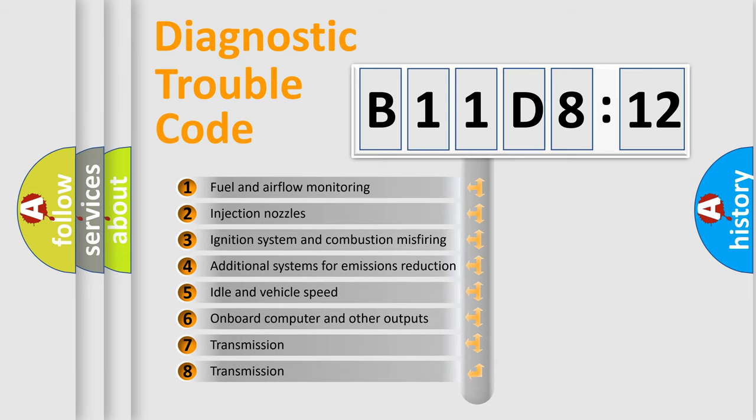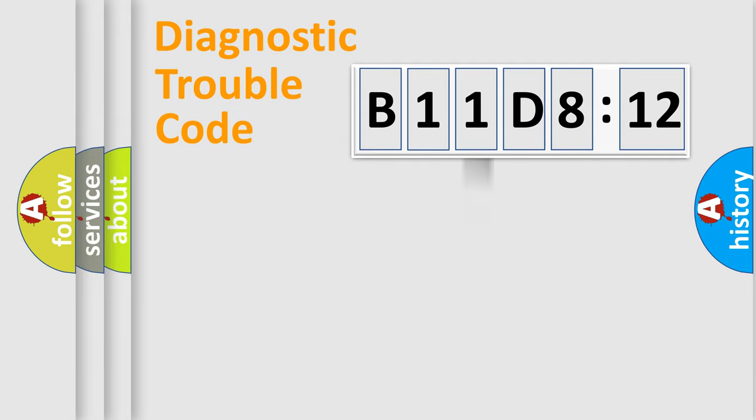The third character specifies a subset of errors. The distribution shown is valid only for the standardized DTC code. Only the last two characters define the specific fault of the group.